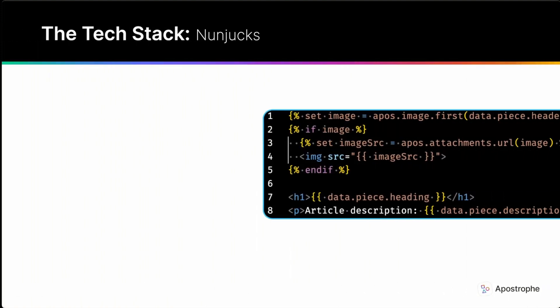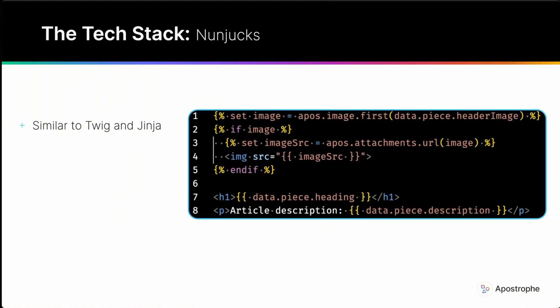Here are some main features of Nunjucks. It has a syntax similar to many Django-inspired templating languages. If you're already familiar with languages such as Twig or Jinja, you'll find Nunjucks' syntax to be very similar. This makes it easy to jump right in and reduces the learning curve. Like those languages, Nunjucks also has support for template inheritance, macros, control structures, and much more.